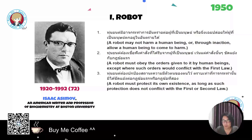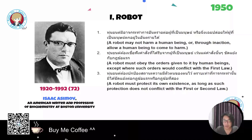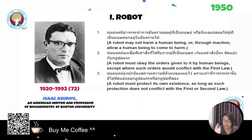He wrote the Three Laws of Robotics: First, a robot may not harm a human being, or through inaction allow a human being to come to harm. Second, a robot must obey orders given by humans, except where they conflict with the first law. Third, a robot must protect its own existence as long as it doesn't conflict with the first or second law.